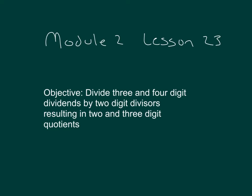The objective is to divide three- and four-digit dividends by two-digit divisors, resulting in two-digit and three-digit quotients.